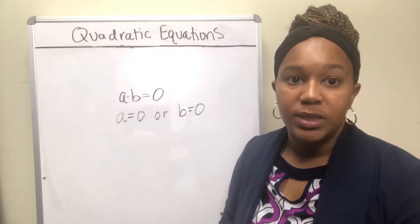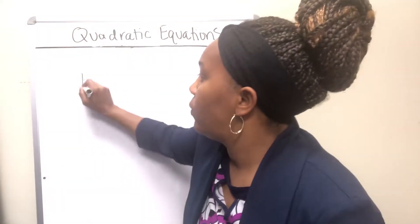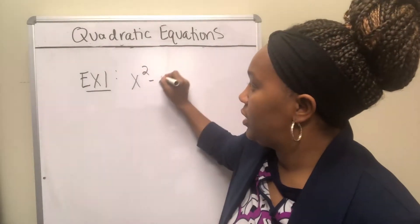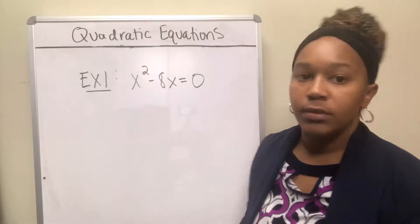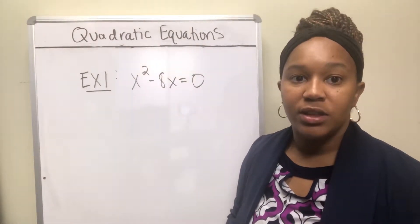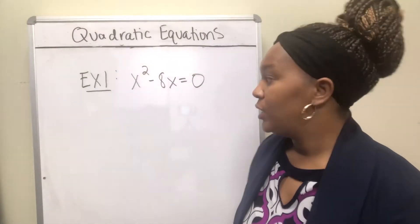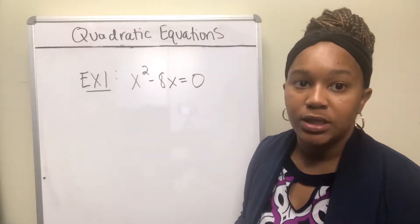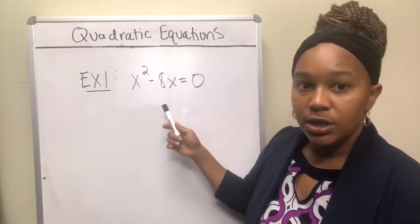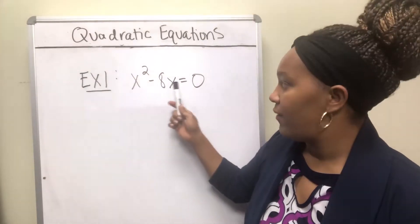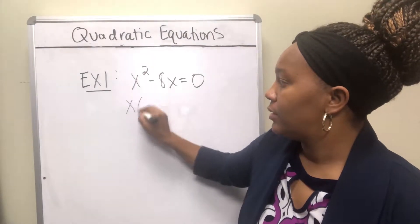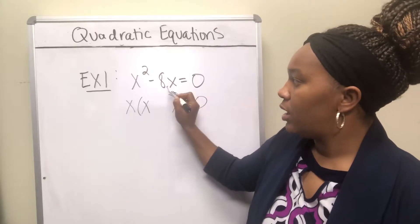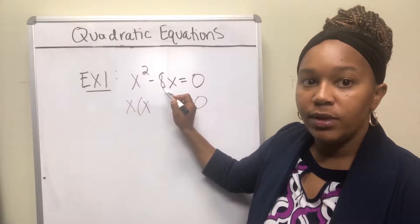So let's jump in and do some examples. Example one: we're going to solve x squared minus 8x equals zero. If we want to solve it by factoring, the first thing we have to do is factor. The first thing we want to do is look for a greatest common factor. There is a greatest common factor here, and it is x. Both of these have an x in common, so you can pull out an x. If you pull out an x here, you're left with an x, and if you pull out an x here, you're left with a minus 8.